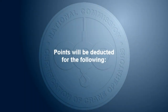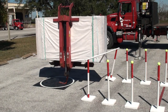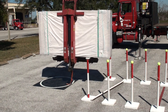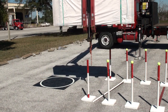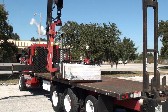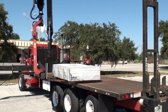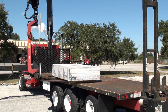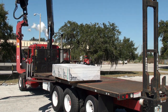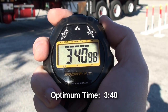Points will be deducted for the following: test weight or fork assembly touching ground or zigzag corridor; test weight left outside designated area; exceeding optimum time.